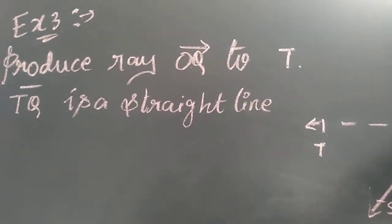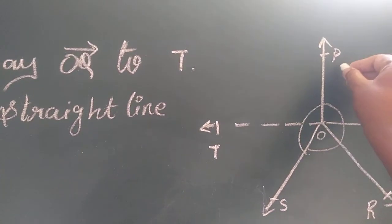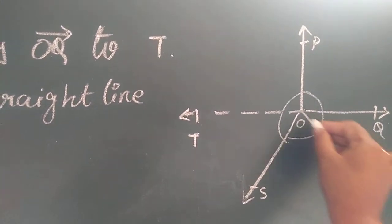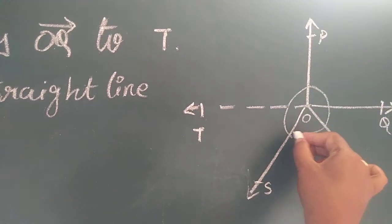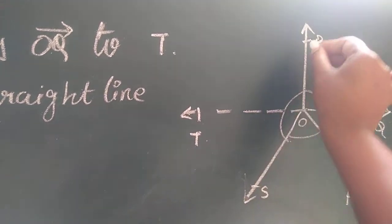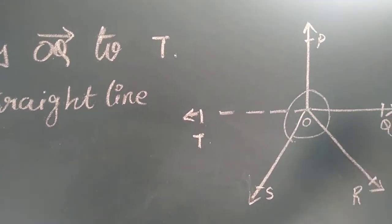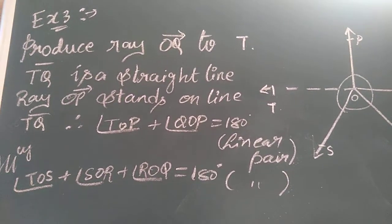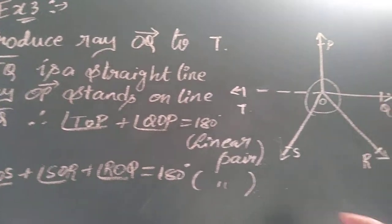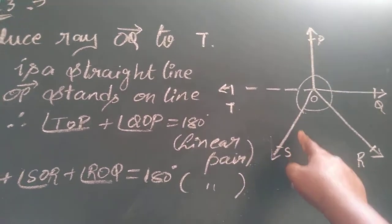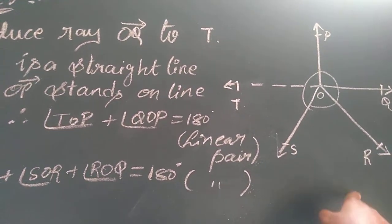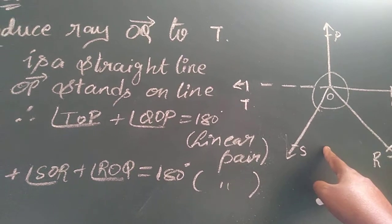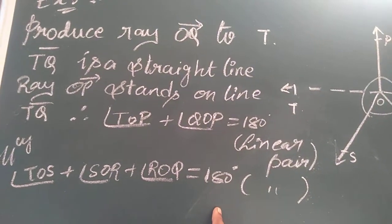Now I am going to write: OP is the ray standing on line TQ, such that angle POT plus angle POQ equals 180 degrees. Similarly, all three angles on the lower side — angle TOS plus angle SOR plus angle ROQ — equals 180 degrees, as I have written here.